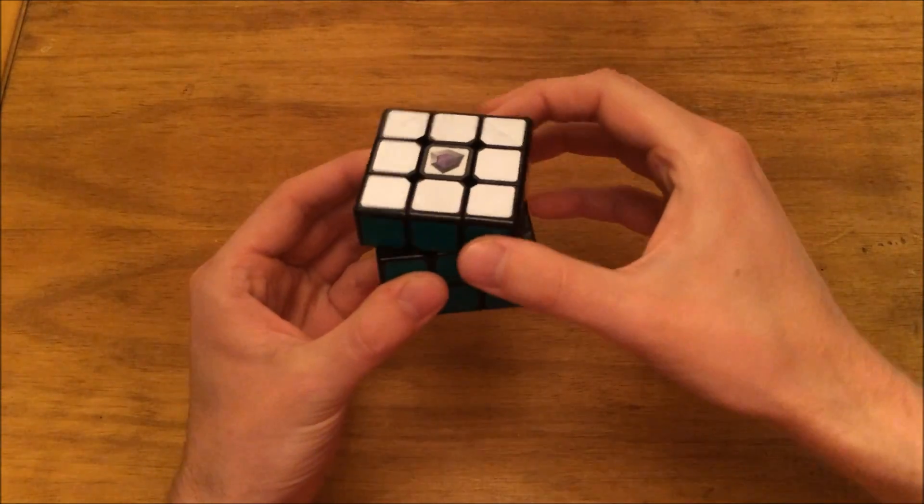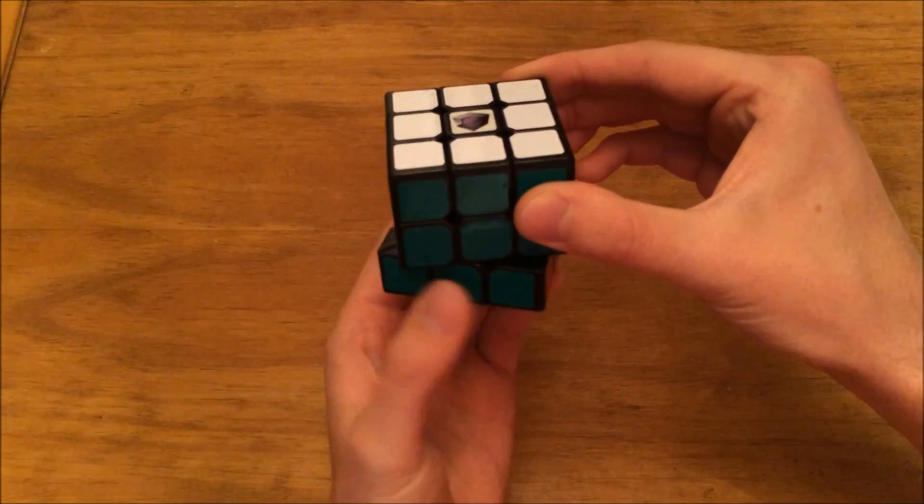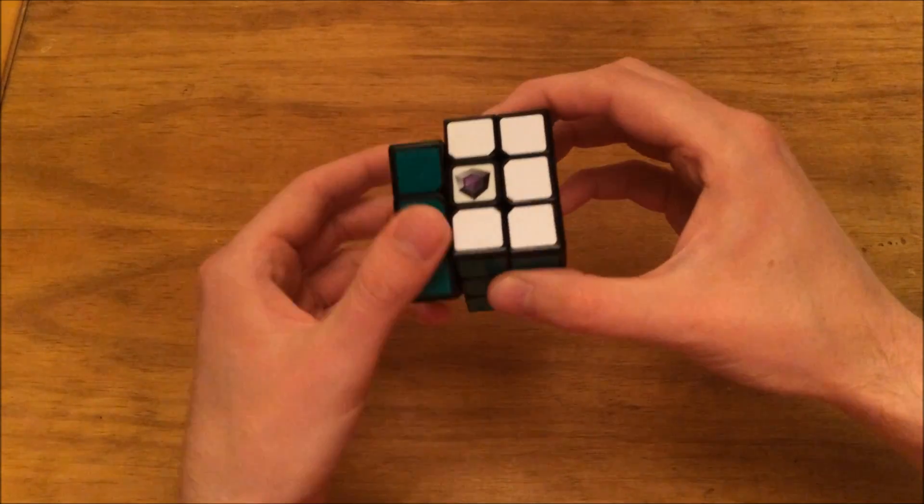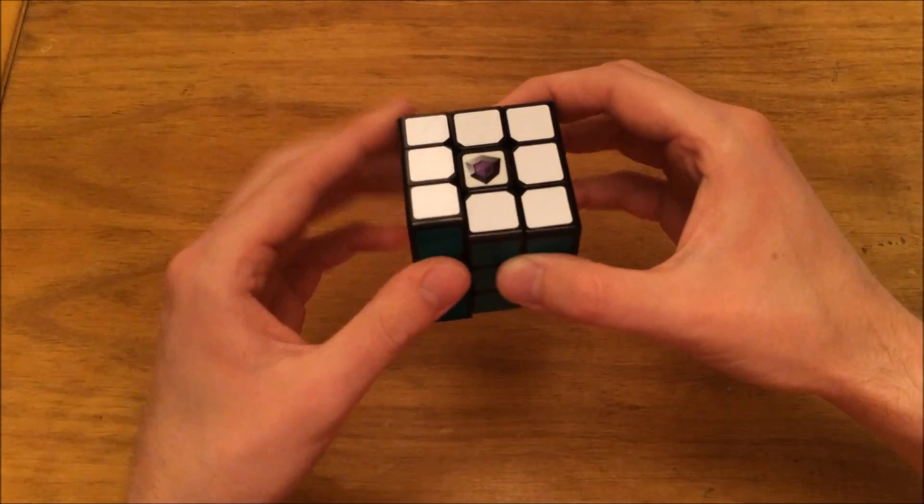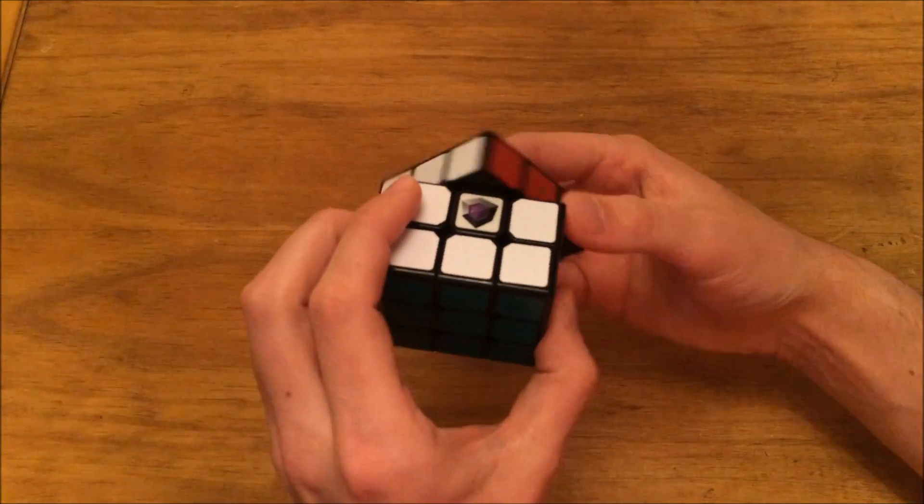If this is our top layer, this is going to be our down layer right down here. We also have our right layer, our left layer, our front layer, and our back layer.